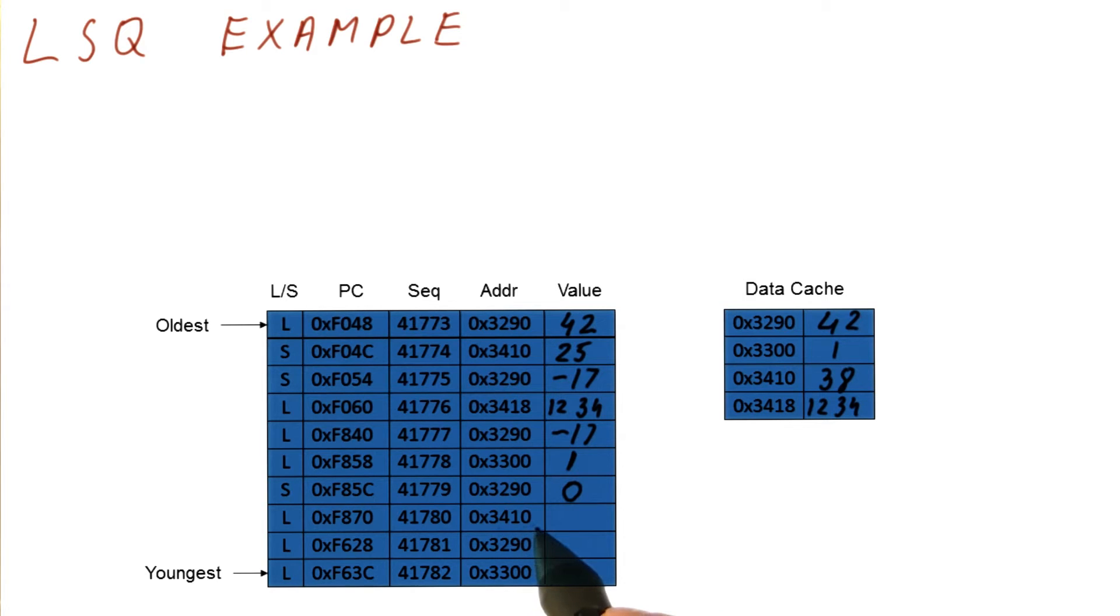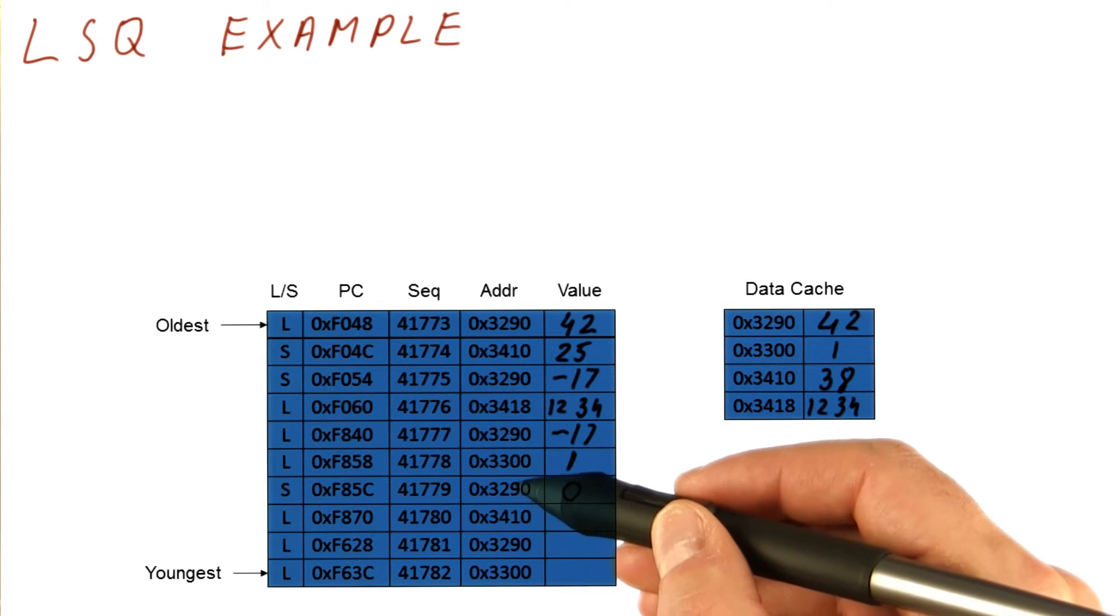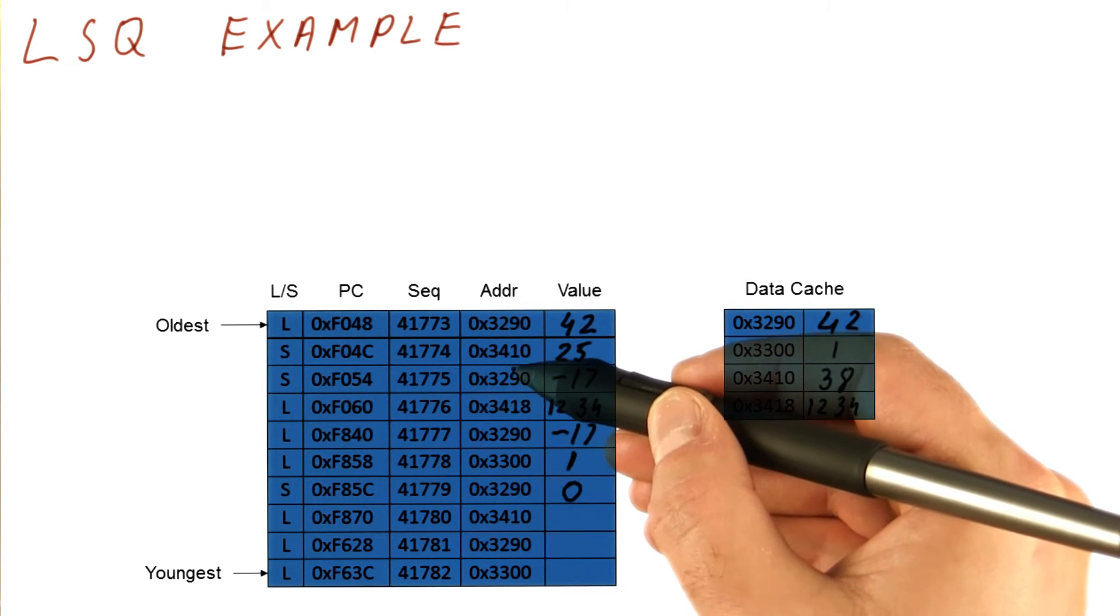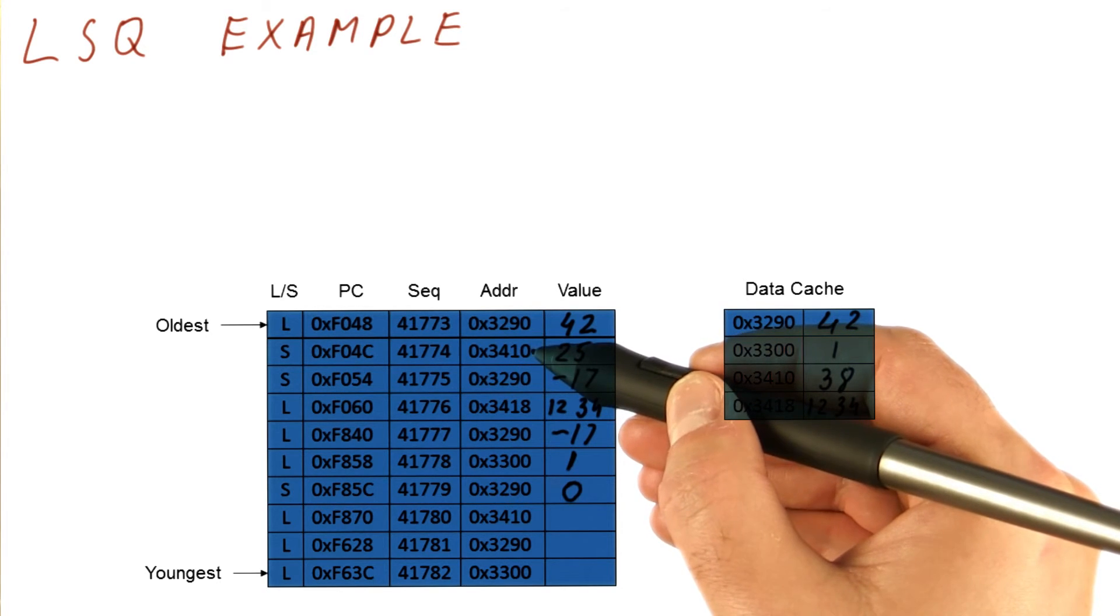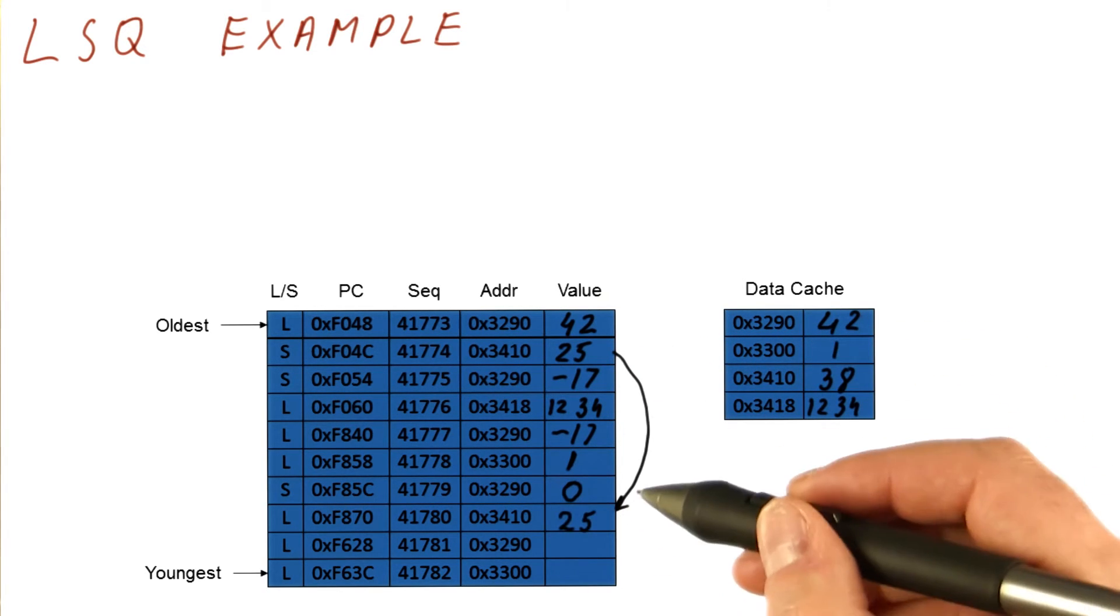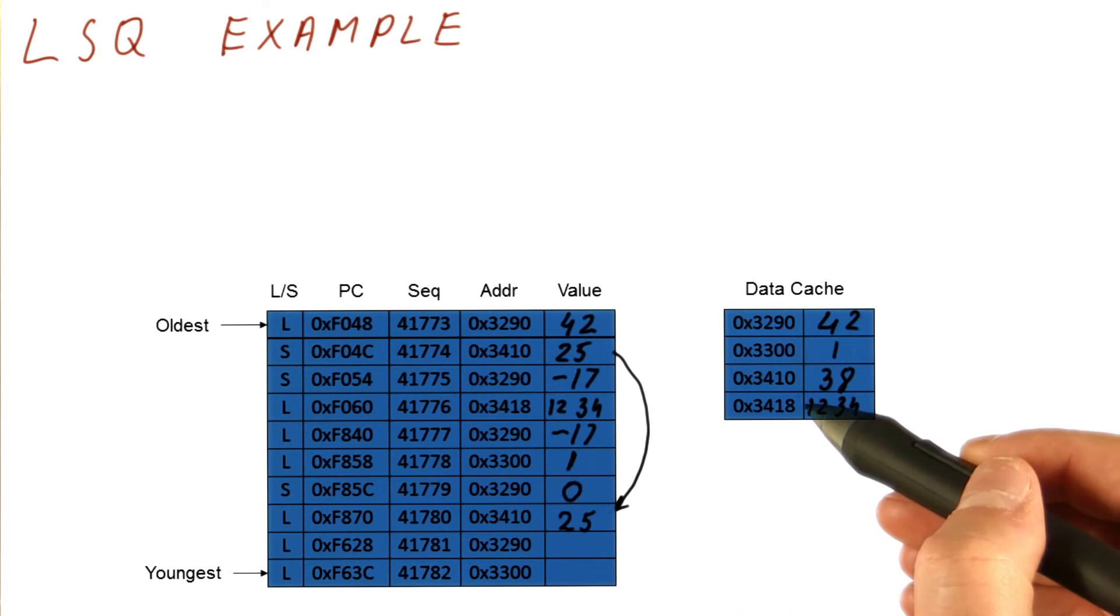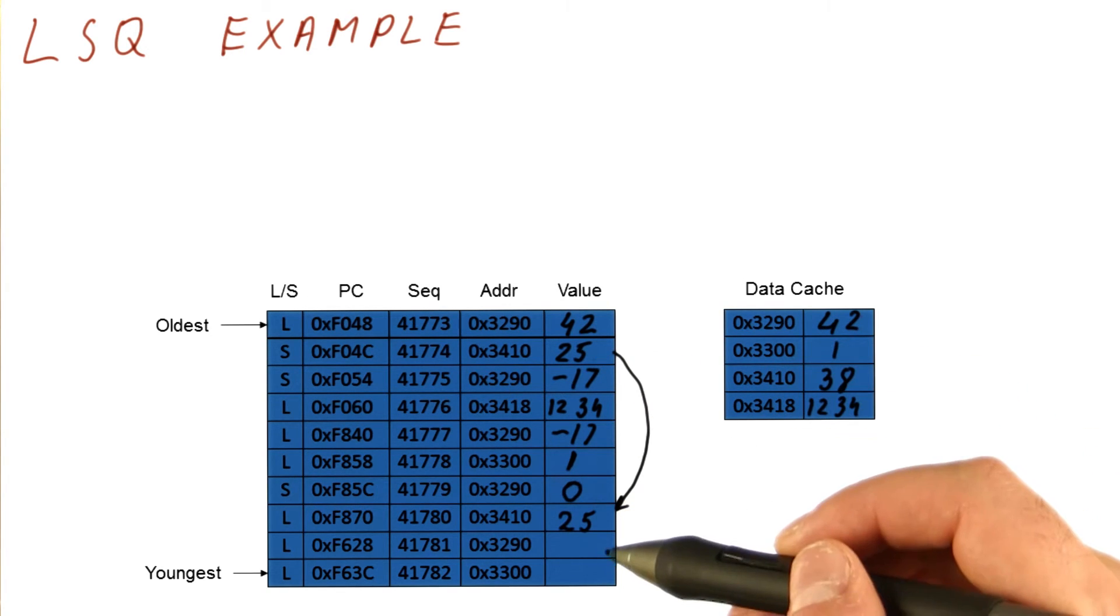Next, we have a load from 3410. It searches the previous accesses for a store that matches this address, and it finds 1 over here. So it just copies the value of 25. So again, we have a load that never accesses the cache, because it found what it needed in the load store queue.